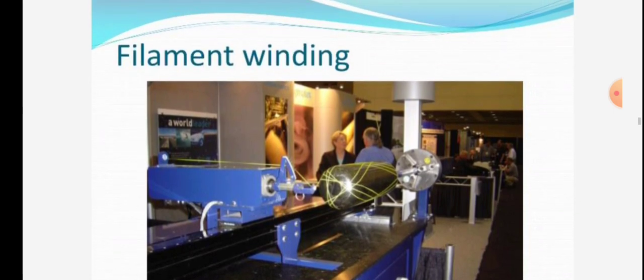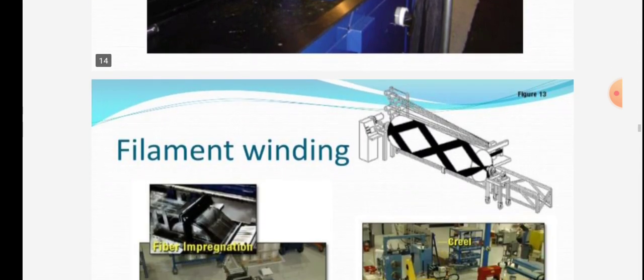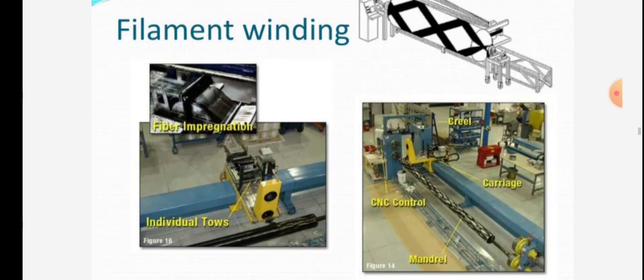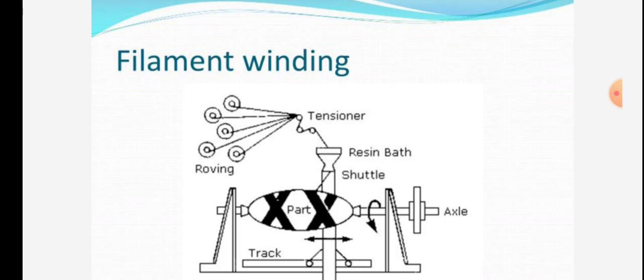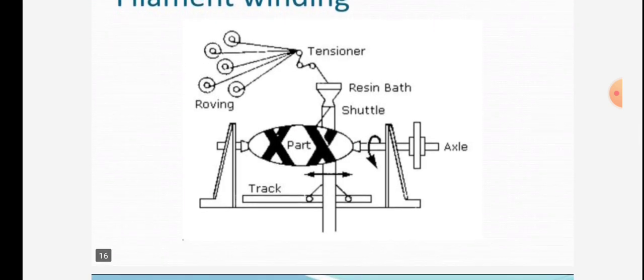The filament winding process is shown in figure. Fiber impregnation is given in figure. Individual towels, CNC control carriage, and mandrel are given. Roving, tensioner, resin bath, and shuttle are shown.